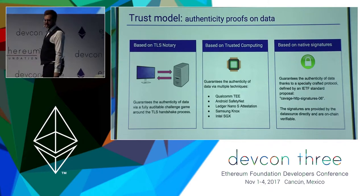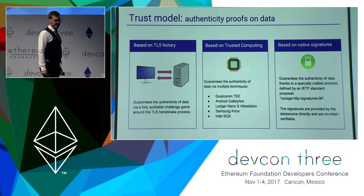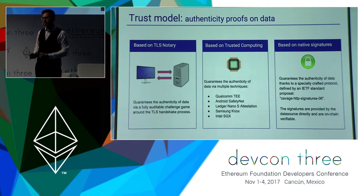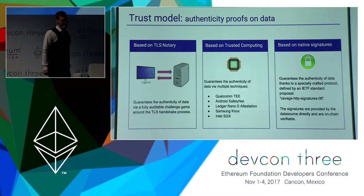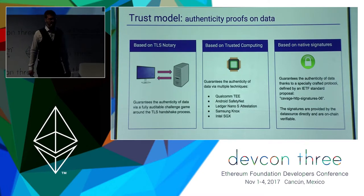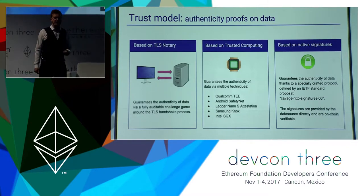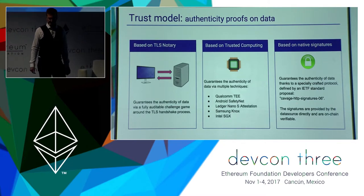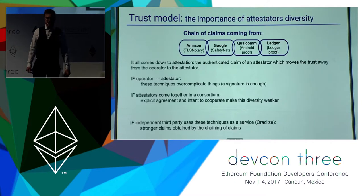In general, web APIs do not sign the data, and this is why we need to leverage different techniques. We've seen what Chainlink does with the Town Crier project, which is based on Intel SGX. Oraclize is currently using sandboxing techniques backed by software guarantees such as TLS Notary, and others backed by hardware techniques like Intel SGX, the Qualcomm TEE, and Ledger Nano S attestation. There are many different ways to give this kind of evidence, and Oraclize is not using a single technology — we believe that would be quite a weak architecture.